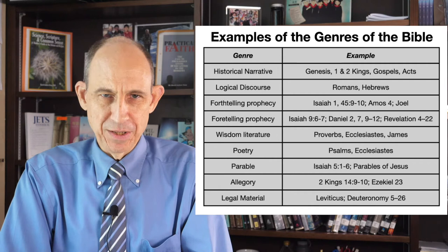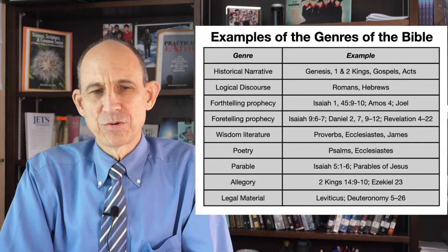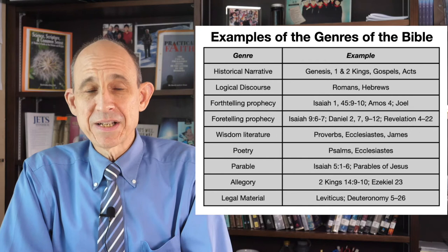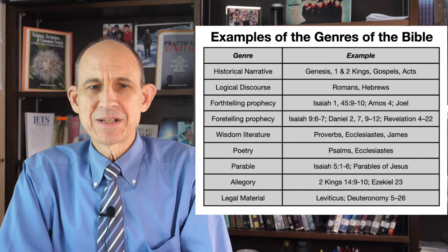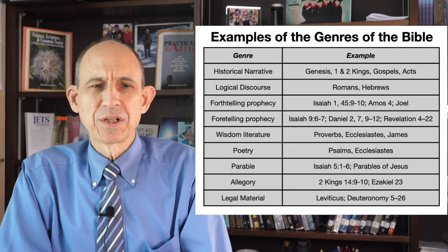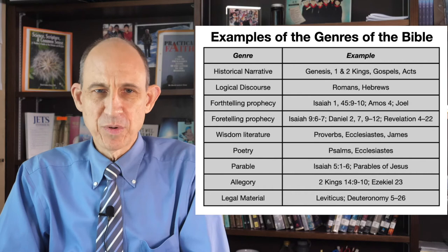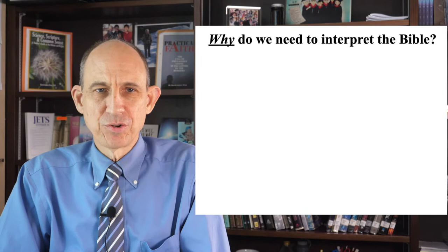The last genre I want to bring to your attention right now is legal material. The Old Testament has quite a bit of legal material — the book of Leviticus is almost all legal material; Deuteronomy chapters 5 through 26 is primarily legal material. Legal material consists of laws given to the nation of Israel, prescribing the ways in which God wants the people to whom these laws apply to live. One of the challenges of Bible interpretation is not so much understanding what the laws say, but addressing the question of to whom these laws apply. We'll be talking about that as we go through our workshop on interpretation.